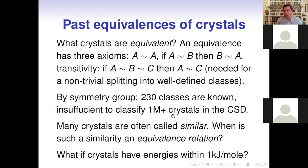Crystals are being discovered at a faster rate than these classifications can handle — the Cambridge Structural Database already has more than one million crystals. That's why we would like to find a stronger classification. Many times we also hear the word 'similar crystals.' Chemists often call crystals similar if they have close energy values, for example within one kilojoule per mole or less.